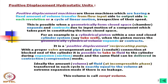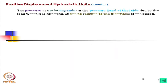In positive displacement machines, the volume is taken in and then cut off; the whole volume is pushed out on the output side. Usually there is no suction head for a positive displacement pump, though depending on the machine it may have a low suction head. The pressure at the outlet depends on the pressure head due to the load being handled, and has no relation to the kinematics of the pistons. If there is no load, only the fluid is being moved with minimal resistance pressure.